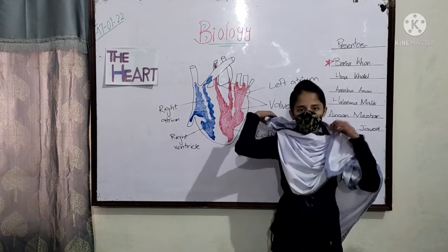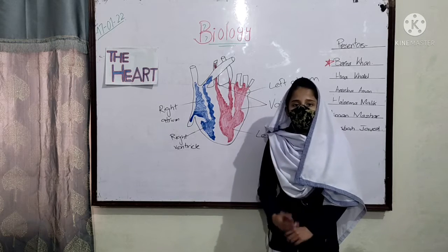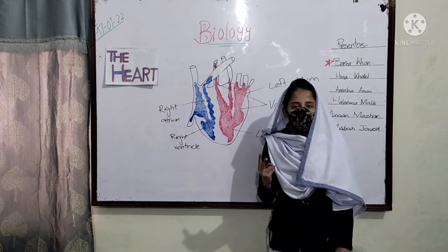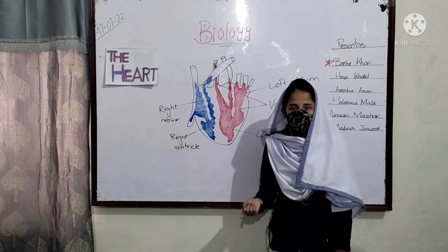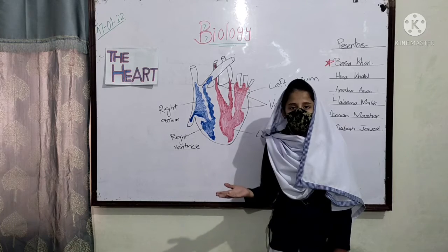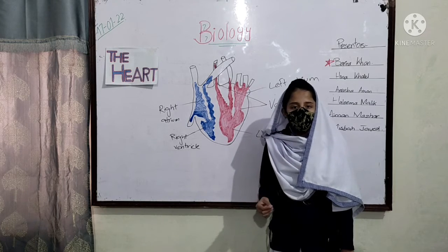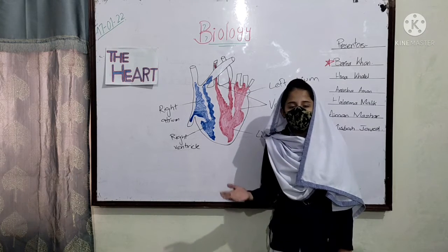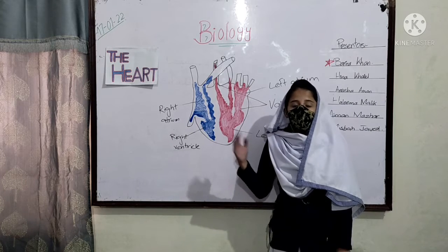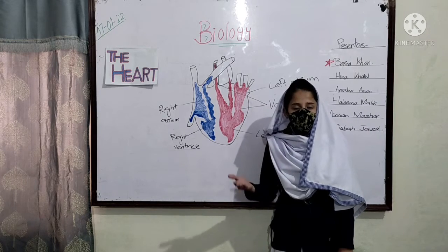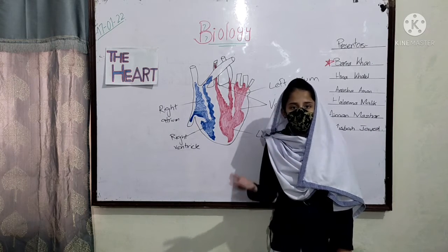Both atria contract at the same time, and so do the ventricles. The blood from the body parts and lungs enters the atria. Both atria contract, then they push the blood to the ventricles.